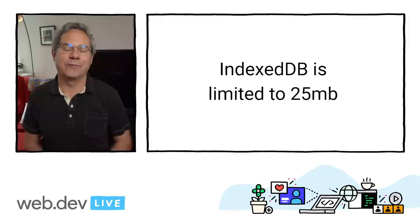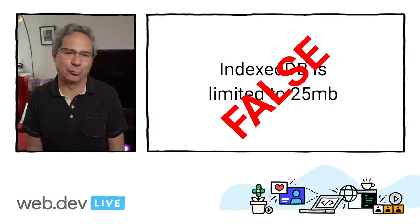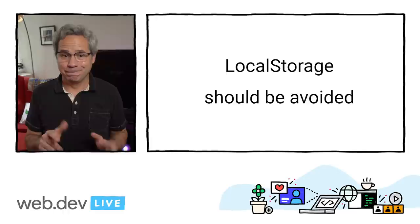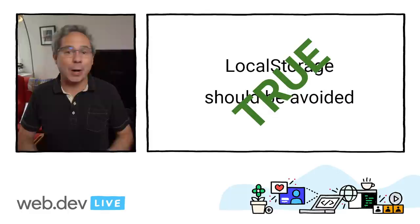True or false: IndexedDB is limited to 25 megs. False — gone are the days of tiny storage quotas. True or false: local storage should be avoided. True — it's synchronous and may cause performance issues by blocking the main thread.